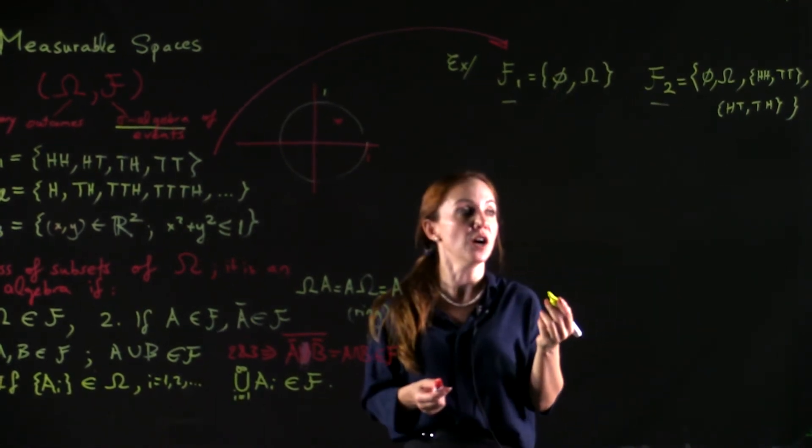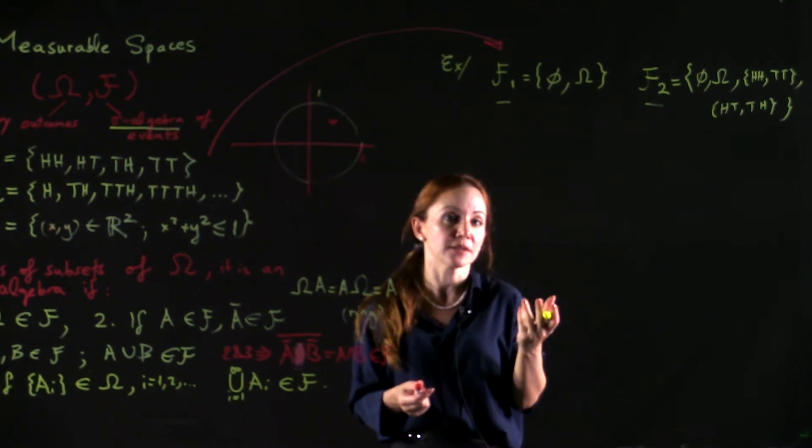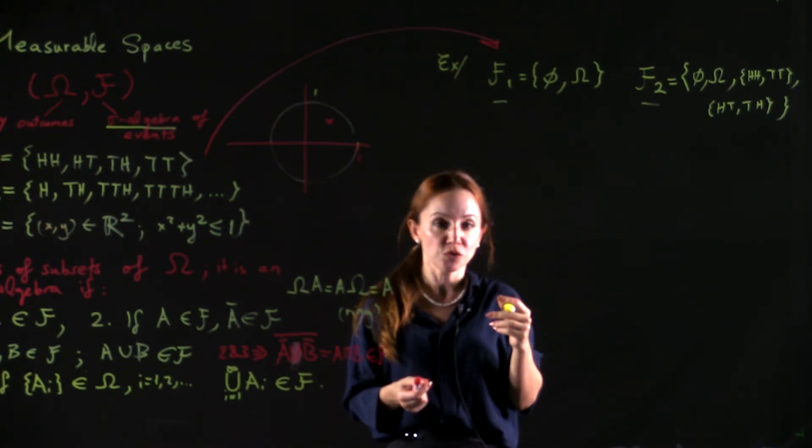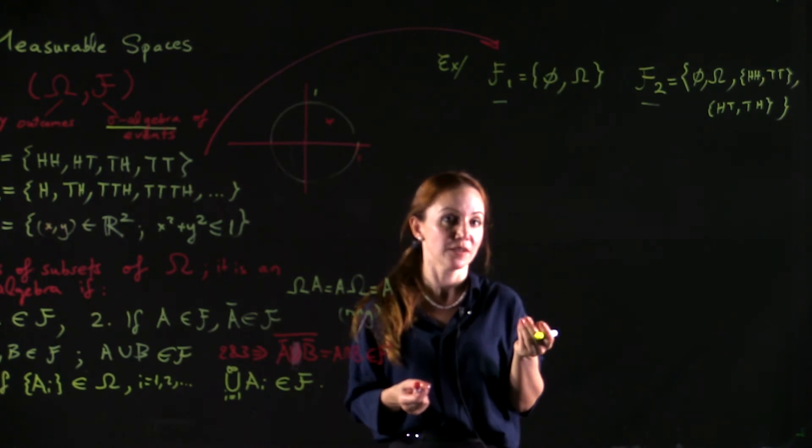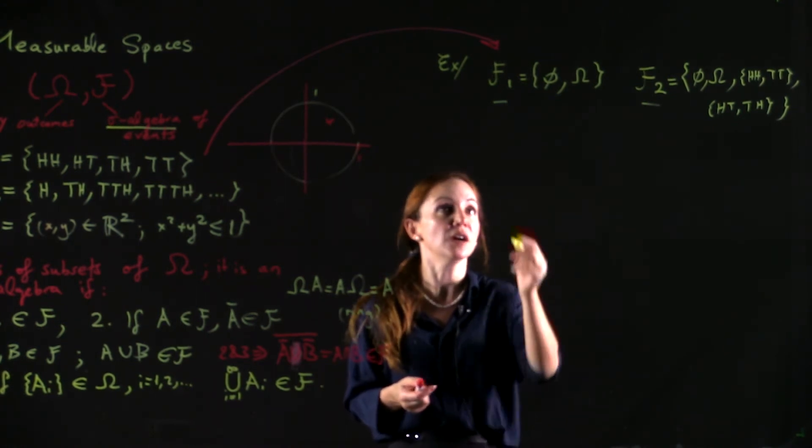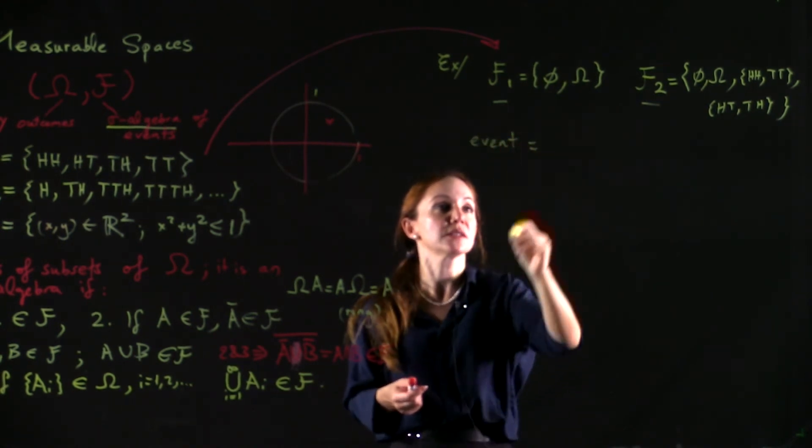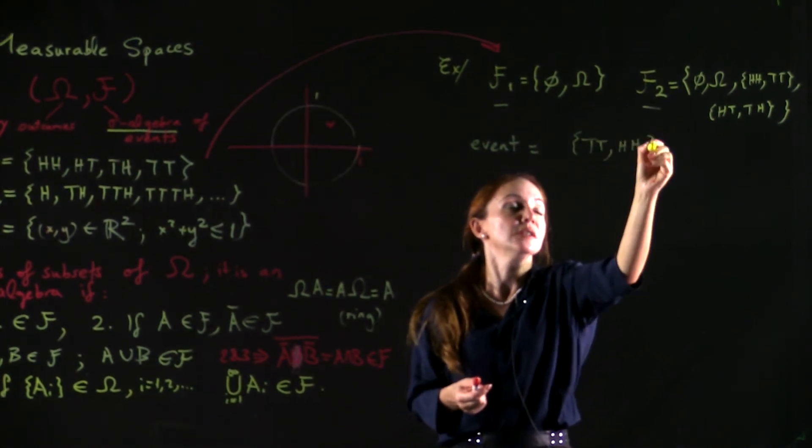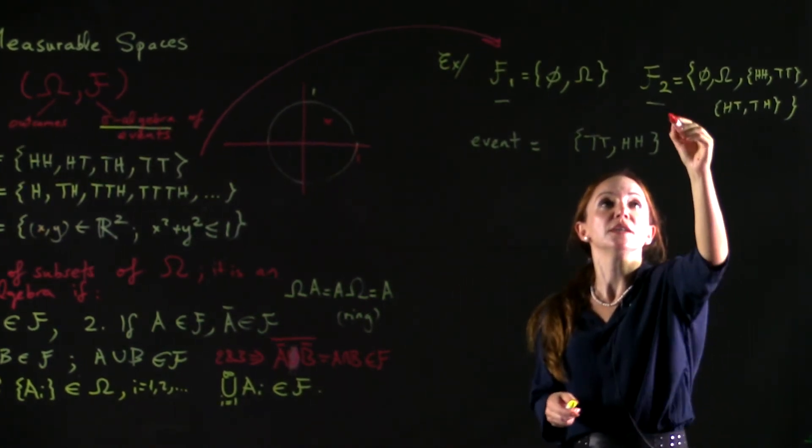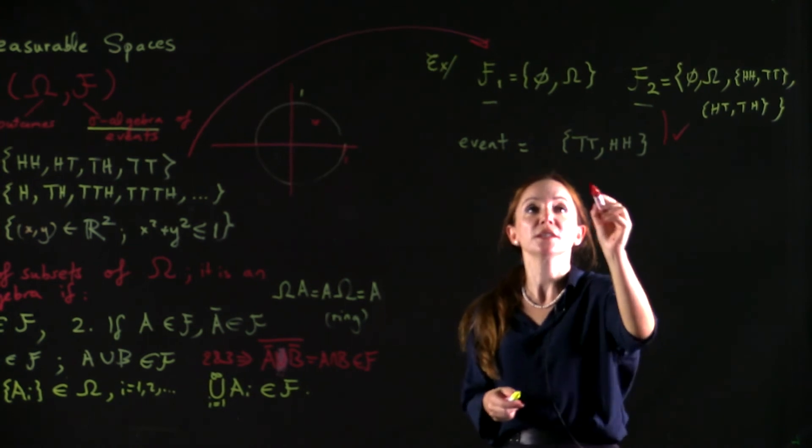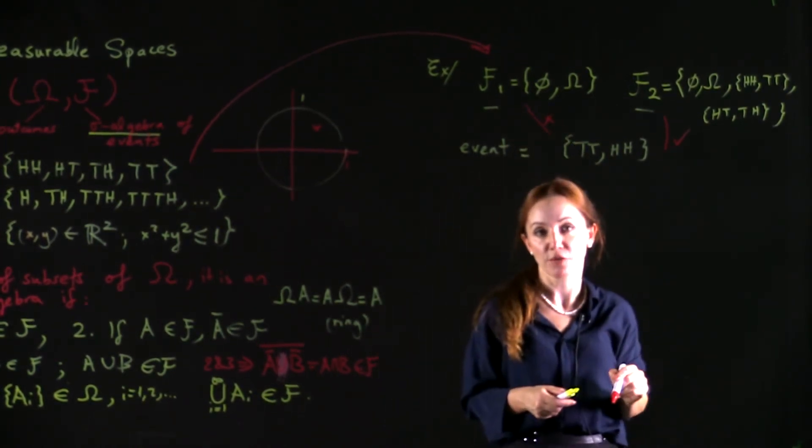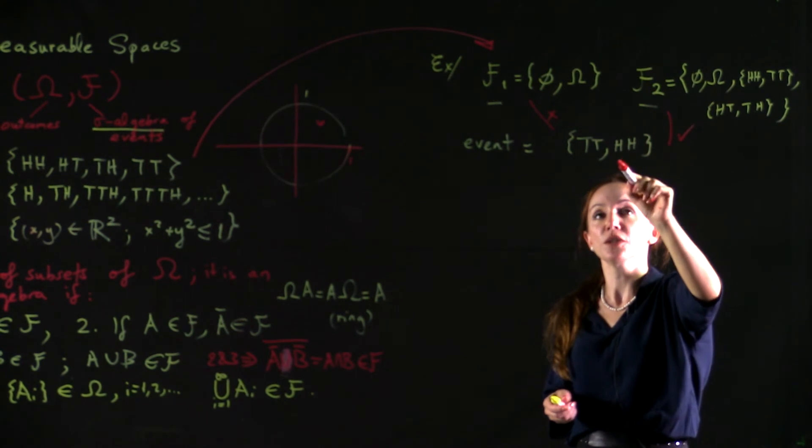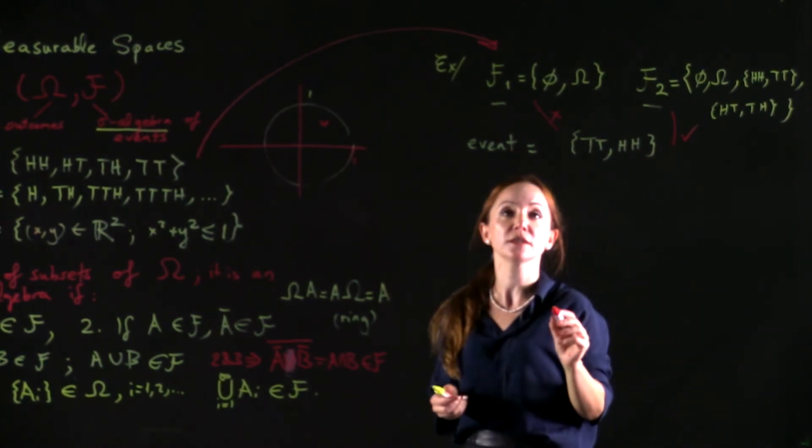For example, if we ask the question, did the event of getting two of the same face occur or not? That would be the event TT union HH. This event is a valid event in F2, but it is not a valid event in F1. So F2 contains enough detail to give us information about this event.